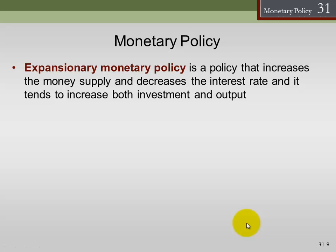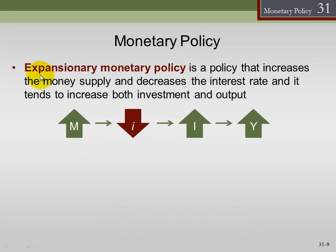Expansionary monetary policy increases the money supply; contractionary monetary policy decreases the money supply. With expansionary policy: money supply goes up, interest rates go down, investment and consumption go up, which causes real output to go up — at least in the short run.